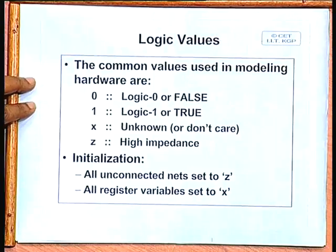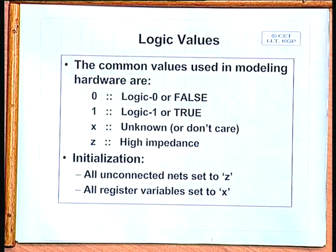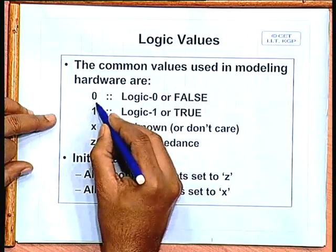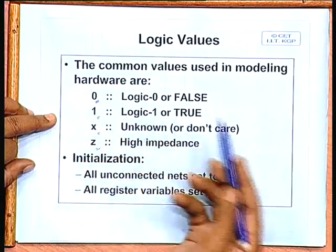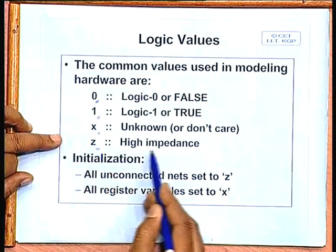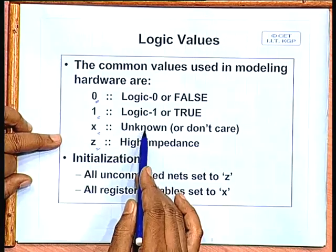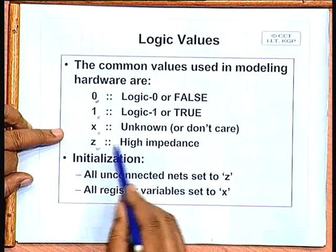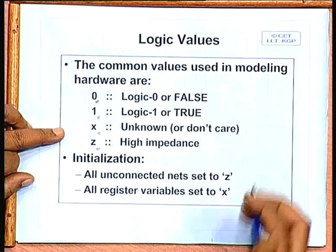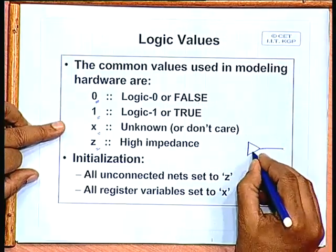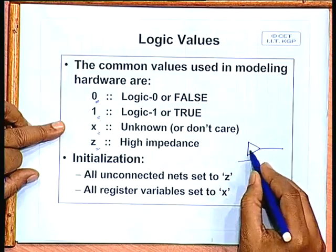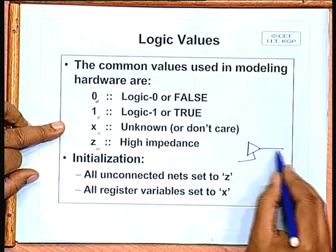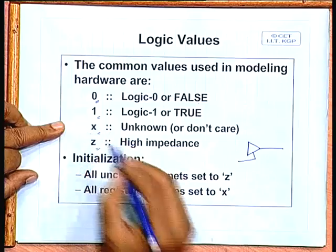Next, let us look at the different logic values used in Verilog for simulation or synthesis. There are four logic values: 0 means logic 0, 1 means logic 1, z means the high impedance state, and x is an unknown state. Unknown and high impedance are different. When a line is at high impedance you know for certain that the driver has tri-state capability and the tri-state control is currently disabled. When you say x, you really do not know what value — 0 or 1 — the line is at.